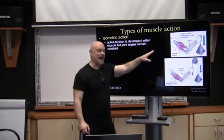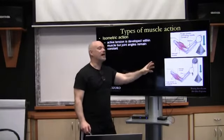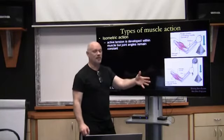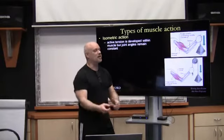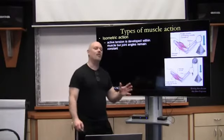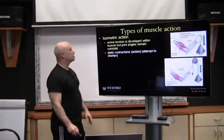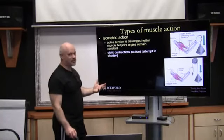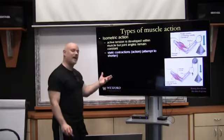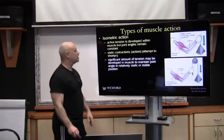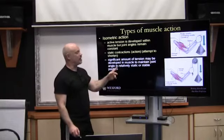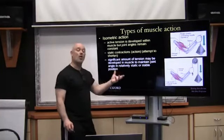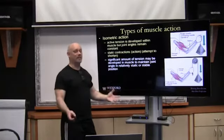In an isometric action, the muscle is trying to fire, the lever is not moving, the external load is not moving, the lever system at the joint is not moving, and the joint angle remains the same. It's what they also call a static action or static contraction — it's attempting to shorten. A significant amount of tension may be developed in the muscle to maintain this joint angle in a relatively static or stable position. That's an isometric action.